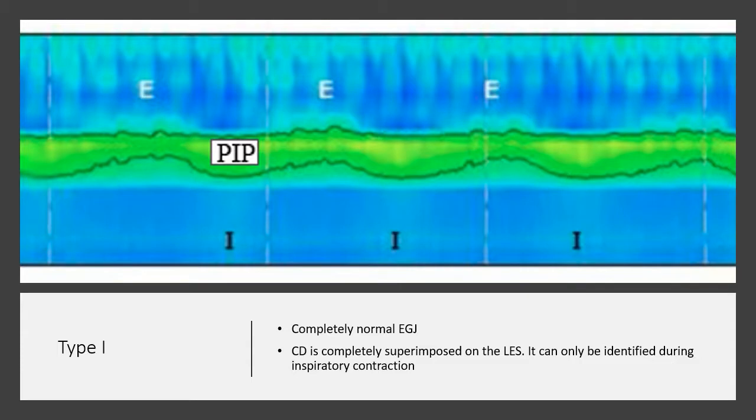A type 1 gastroesophageal junction is completely normal. The crural diaphragm is completely superimposed on the lower esophageal sphincter. It can only be identified during inspiratory contractions.